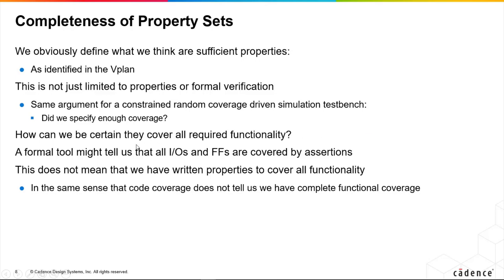A formal tool could report, for example, that every I/O and every flip-flop is covered in the fanning cone of some assertion, using something called ProofCore in Jasper Gold. However, this does not mean we have written enough properties to cover all functionality, even if the metrics from the tool tell us everything has been covered — just as code coverage doesn't tell us we have complete functional verification.